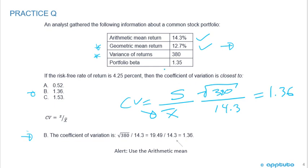The beta and the risk-free rate were red herring information we didn't need. Those are things you'd use for calculating the CAPM, for example. This is typical of CFA Level 1 questions — they give you numbers you don't need, and really just two numbers that you actually do need. A little confusing if you're not on top of your game.